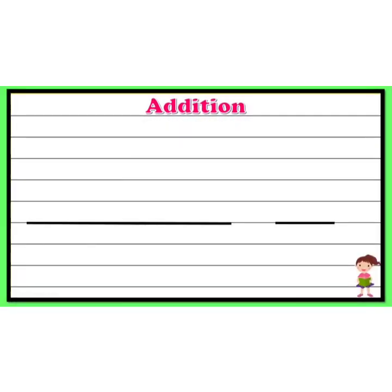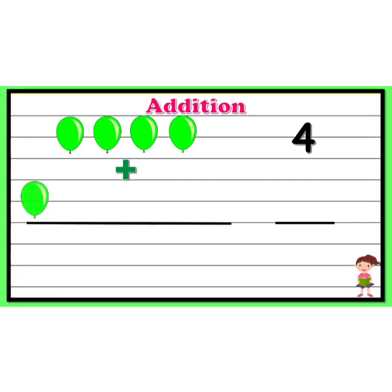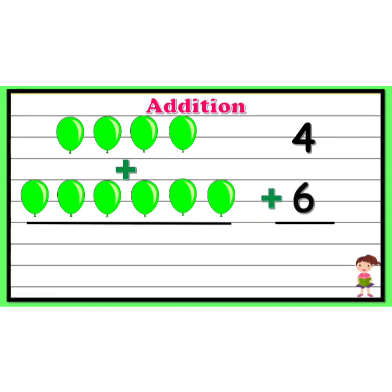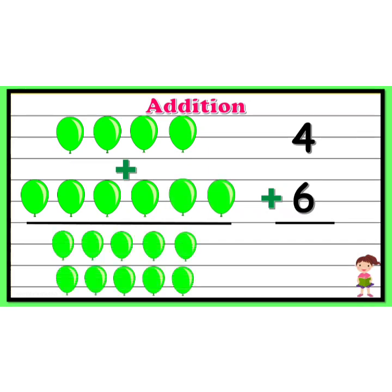Let's take another example and start counting the number of objects: one, two, three, four — so we have four balloons — plus one, two, three, four, five, six, so we have plus six balloons. We have to find the total number of balloons. Let's count: one, two, three, four, five, six, seven, eight, nine and ten. Totally we have ten balloons. So, four plus six gives ten.